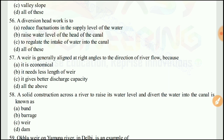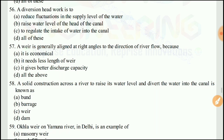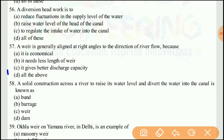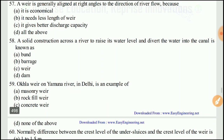Question 57: A weir is generally aligned at a right angle to the direction of river flow because it is economical, requires less length, and gives better discharge capacity. The right answer would be D, all of the above.